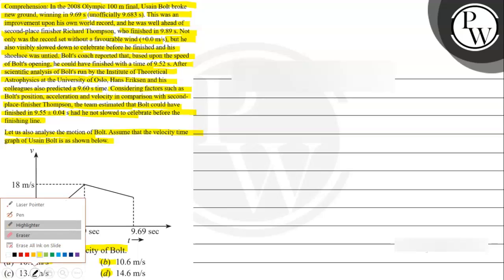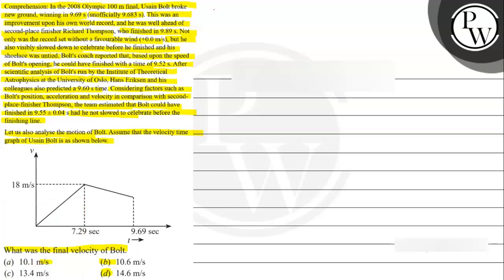The key concept we need to understand is the concept of velocity time graph. In velocity time graph, we need to understand two important things. First is slope of velocity time graph.